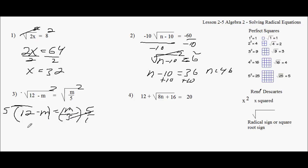So I have to distribute the five, of course, to this. And I get 60 minus 5m equals m. So then I add 5m to both sides to cancel that guy out. And I get 60 equals 6m. Divide by 6. And I get m equals 10. 6 goes into 60 10 times. Really easy.